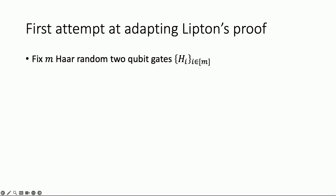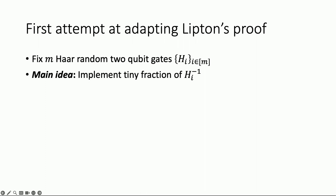Here's a first attempt — it won't quite work, but it will fail instructively. Say you want to compute the output probability of a worst-case circuit with M gates, call it C. I fix M Haar-random two-qubit gates H₁, H₂, …, H_M. The idea: scramble the worst-case circuit using these Haar-random gates. We let the i-th gate of the scrambled circuit, C'_i, be C_i times H_i. If you know anything about the Haar measure, taking any arbitrary gate and multiplying by a Haar-random gate gives you something Haar-random.